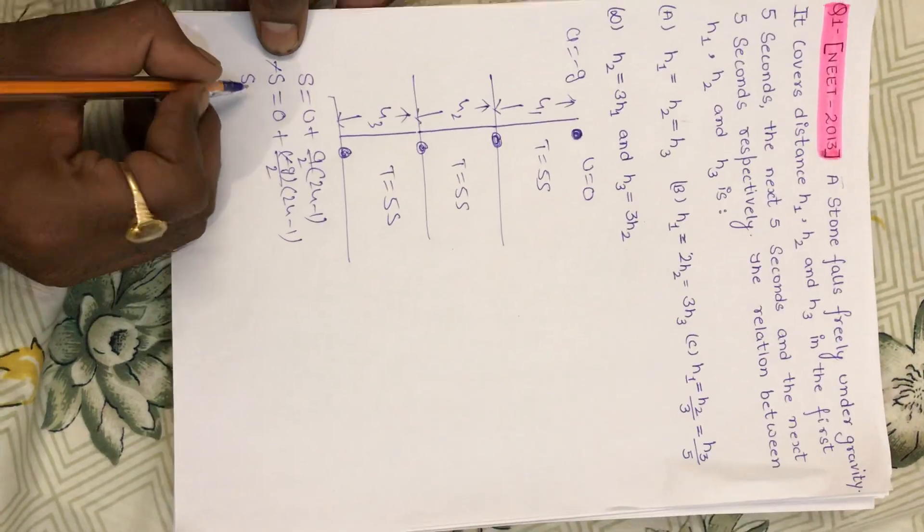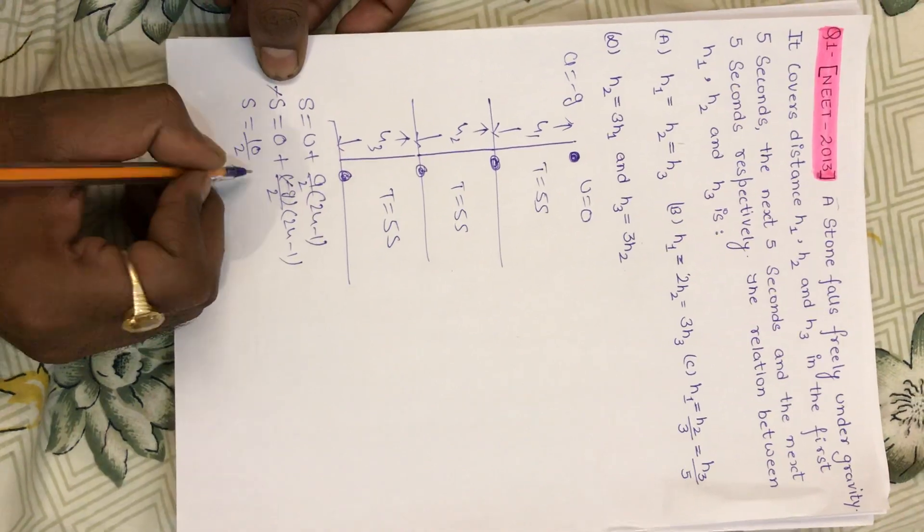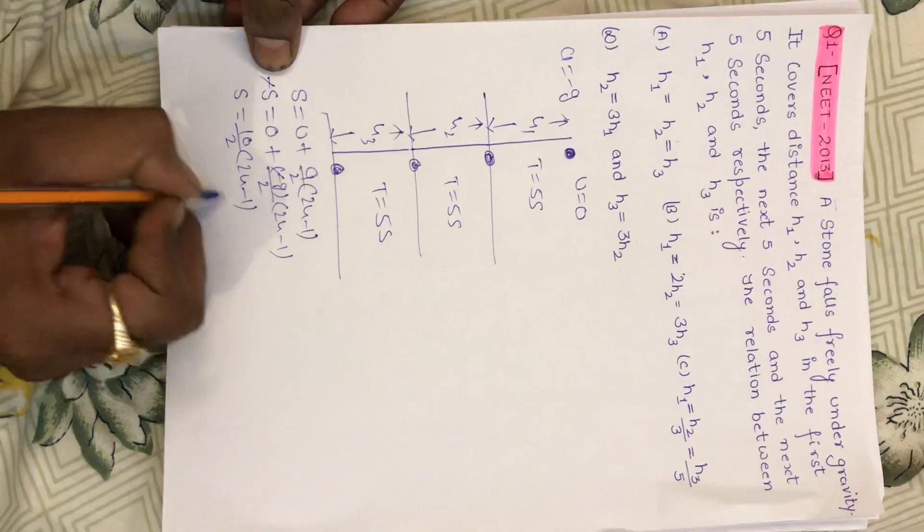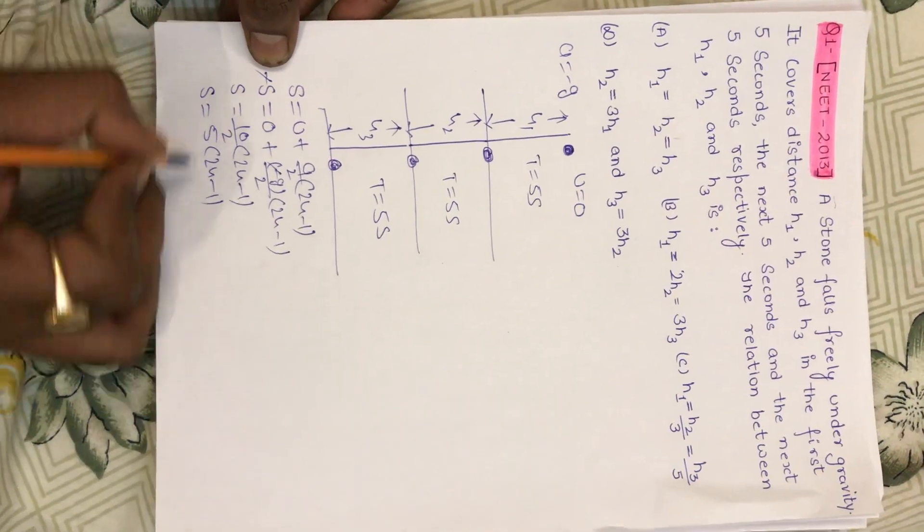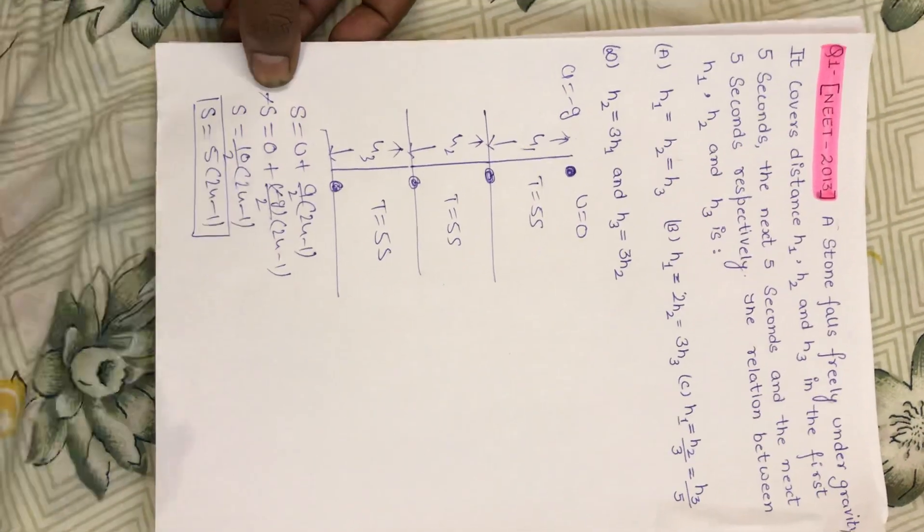So if you see, S is equal to g value, 10 by 2, t squared minus 1. So the result is 5, 2n minus 1. Now let's keep this formula and we will solve all questions.